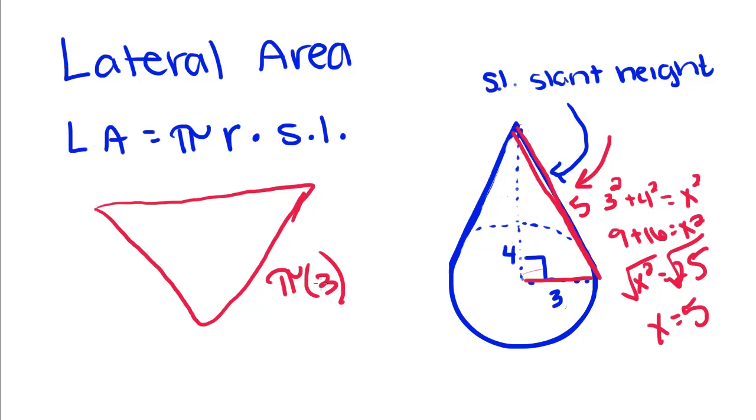So this is 5. So for our lateral area, it's pi times 3 times 5. So we would have 15 pi, and if we had units, it would be units squared, because whenever we find an area, we're finding a two-dimensional measure.